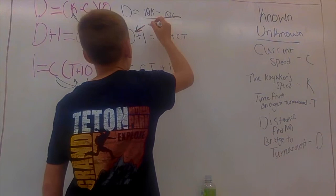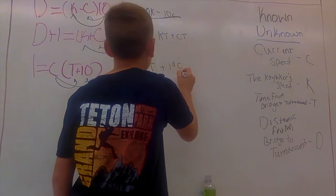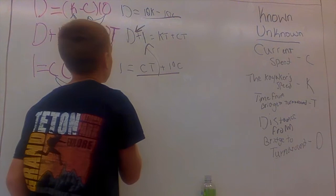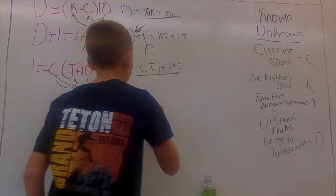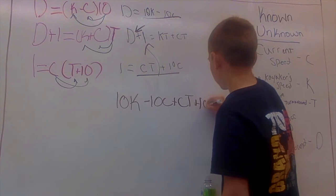And then this 1 is equal to CT plus 10C, which means this 1 is also equal to CT plus 10C. And then we can write our next sentence. And the next sentence will look like 10K minus 10C plus CT plus 10C equals KT plus CT.